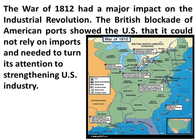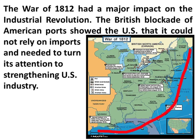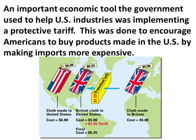The War of 1812 had a major impact on the Industrial Revolution. The British blockade of American ports showed the United States that it could not rely on imports and needed to strengthen U.S. industries. Looking at this illustration, you see a map of the British blockade during the War of 1812 — a blockade prevents ships from other countries from bringing in imports. An important economic tool the government used was implementing a protective tariff to encourage Americans to buy U.S.-made products by making imports more expensive.